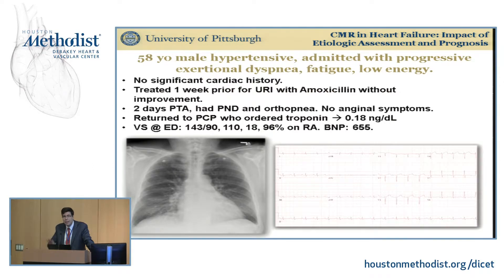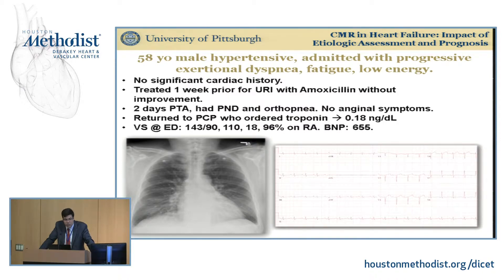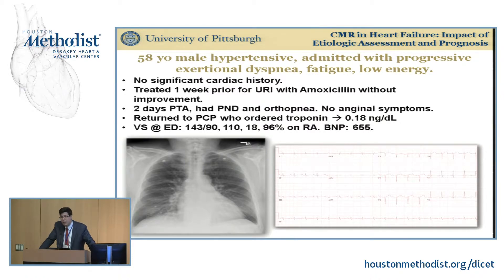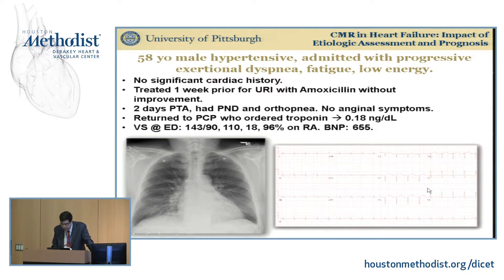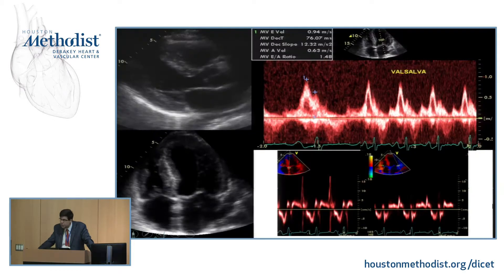Switching now from coronary artery disease and scar to heart failure with preserved ejection fraction: a 57-year-old male admitted with progressive exertional dyspnea, fatigue, and low energy with no significant cardiac history. He had been treated for an upper respiratory infection with amoxicillin, and two days prior to admission he had PND and orthopnea. No anginal symptoms. His PCP checked a troponin after amoxicillin failed to help — it was borderline mildly elevated. In the emergency room, blood pressure was elevated, he was tachycardic, BNP was elevated, chest X-ray showed cephalization and hilar pruning, and EKG showed only poor R-wave progression with no significant ST or T-wave changes indicative of ischemia.